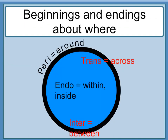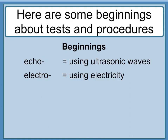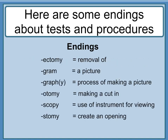Beginnings and endings about where: 'peri-' equals around; 'trans-' equals across; 'endo-' equals within or inside; 'inter-' equals between. Beginnings about tests and procedures: 'echo-' equals using ultrasonic waves; 'electro-' equals using electricity. Endings about tests and procedures: '-ectomy' equals removal of; '-gram' equals a picture; '-graph' or '-graphy' equals the process of making a picture; '-otomy' equals making a cut in; '-scopy' equals use of instrument for viewing; '-stomy' equals create an opening.